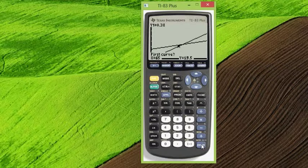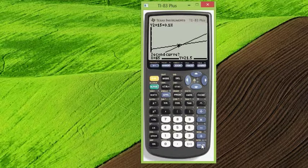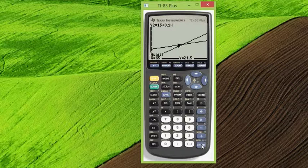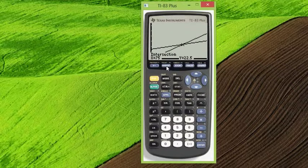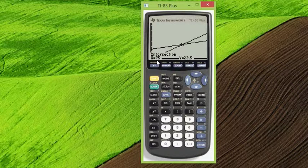First curve means just what's the first line you want to find the intersection with. Second curve means the second line to find the intersection with. And guess means that the calculator is going to use an algorithm to find a very, very close approximation to that point. Okay, usually it's dead on, but sometimes it'll be a little bit off. We'll see what happens here. Okay, so enter, enter, enter, and boom. This time it found the exact intersection. 75 and 22.5.